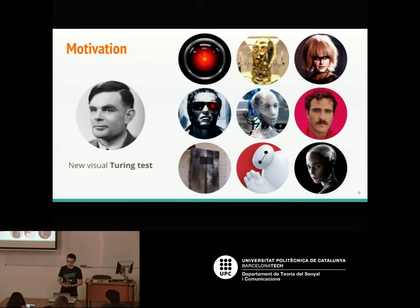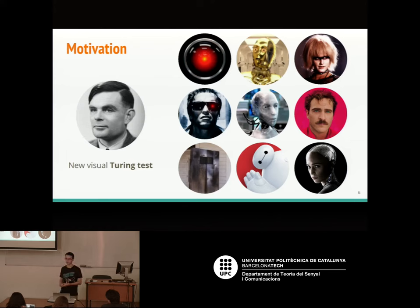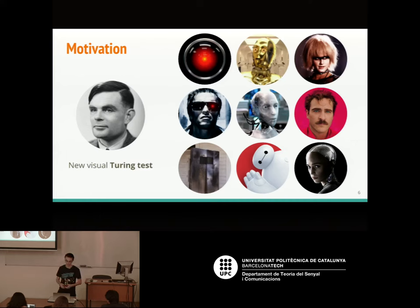A recurring motivation in papers about visual question answering is the new visual Turing test. They are proposing VQA as the new Turing test because it exploits the capabilities of models to understand images and to process questions. We will see that in some slides later.